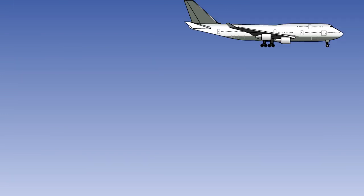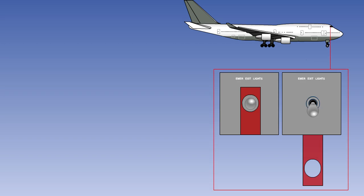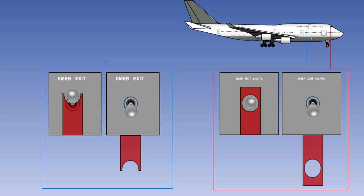The emergency lighting system is controlled by two switches: one on the flight deck and the other in the passenger cabin adjacent to a cabin crew member station. The flight deck switch has three positions: off, armed, and on. It is guarded to the armed position and is in the guarded arm position for all normal flight operations. Adjacent to the flight deck switch, there is a warning light captioned 'not armed'. This light is supplied from the normal aircraft electrical power supply and will come on at any time the aircraft electrical power supply is on and the emergency lights are anything other than armed.